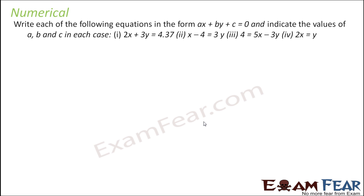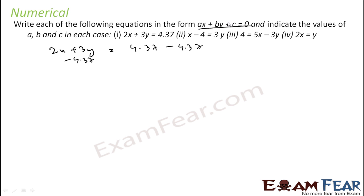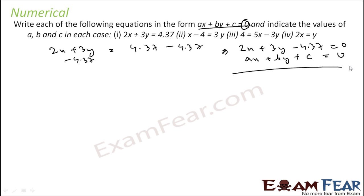Let's convert more equations to general form. For 2x plus 3y equals 4.37, subtract 4.37 from both sides to get 2x plus 3y minus 4.37 equals 0. Comparing with the general form ax plus by plus c equals 0: a equals 2, b equals 3, and c equals minus 4.37.